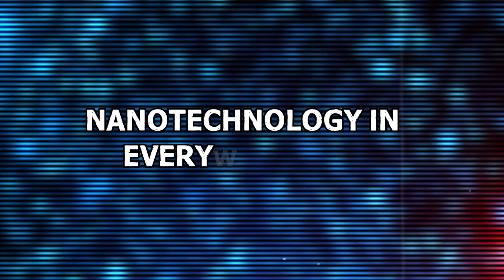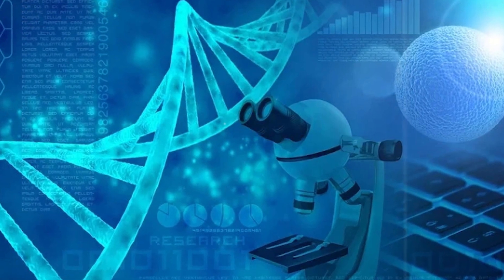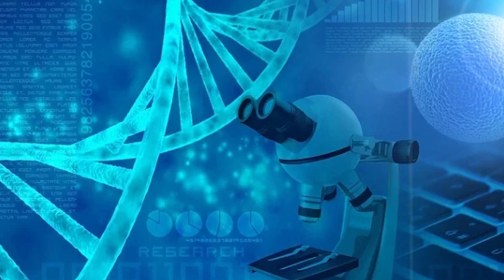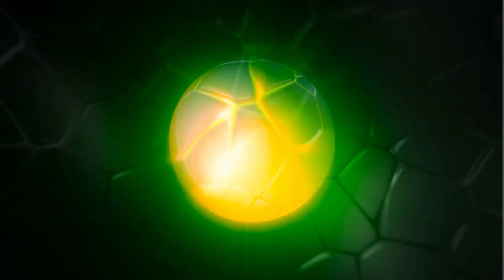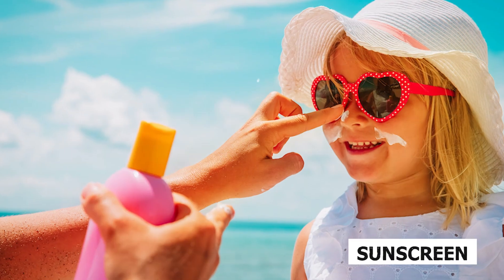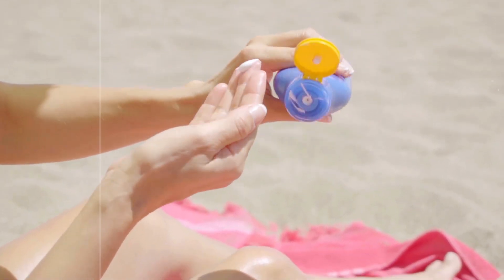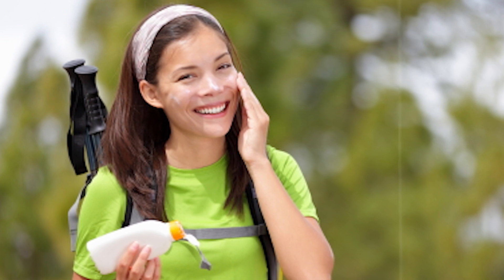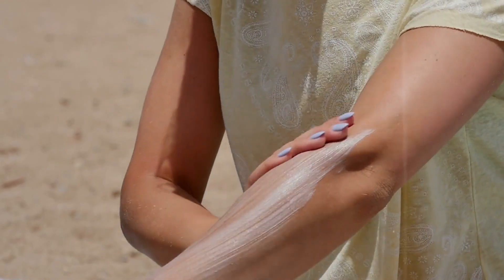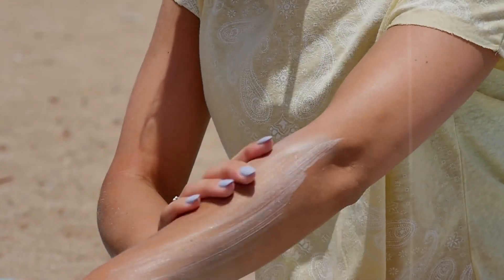Let's discuss how nanotechnology sneaks into everyday items, making them cooler and brighter. First up, sunscreen. With nanotech, we get this excellent sunblock that shields us from the sun's rays without feeling heavy or looking white on our skin. It's like an invisible cloak of protection.